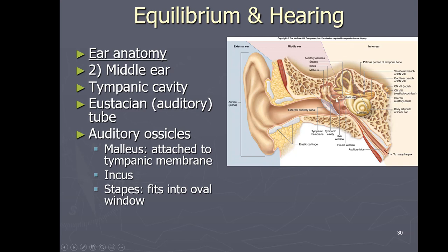The incus is the middle one, and the stapes is supposed to look like a stirrup — you could see how you might fit your foot in there. The malleus attaches to the tympanic membrane, and the stapes on the other end fits into an opening called the oval window. The middle ear also has the Eustachian tube, which goes from the middle ear down to the pharynx, basically your throat.